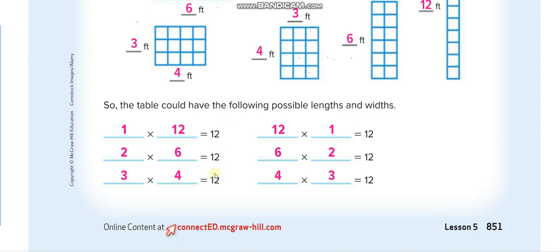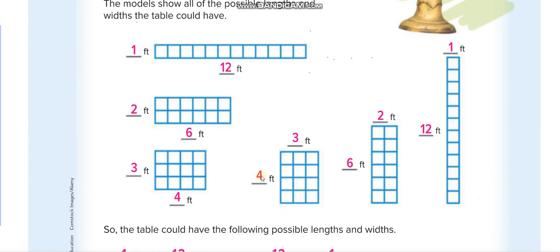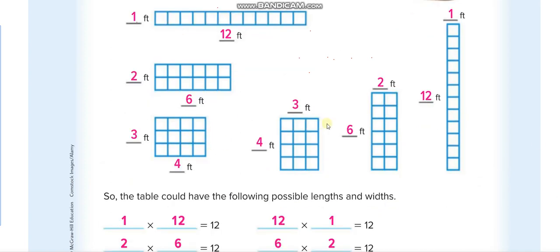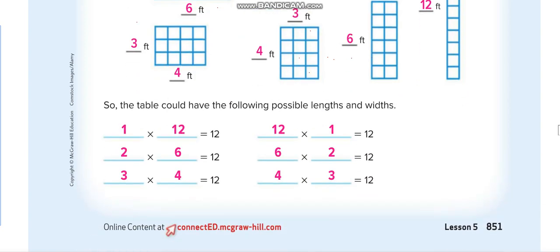So it is possible to have the same area with different dimensions — that is what we study in this chapter. We also see the opposite orientations: 4 times 3, 6 times 2, and 12 times 1. If you draw a figure in the opposite way, it gives the same area.